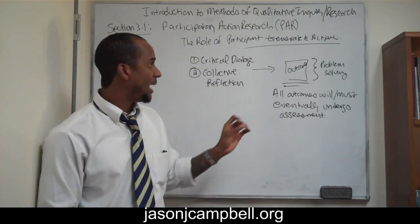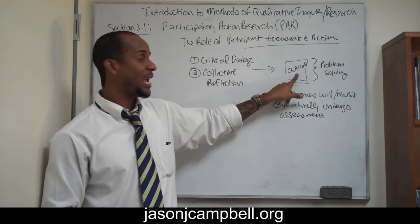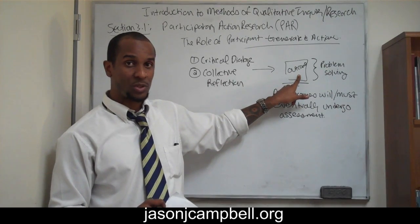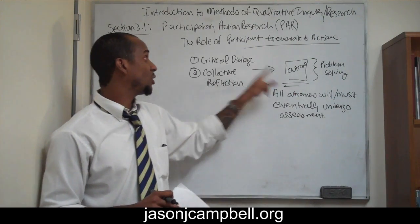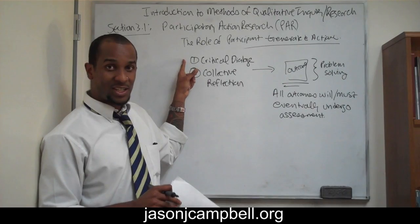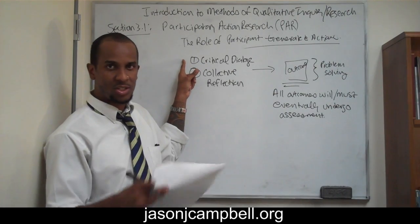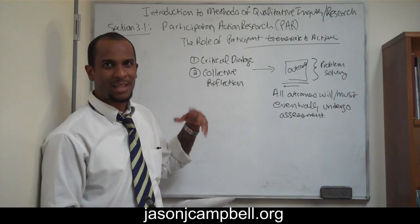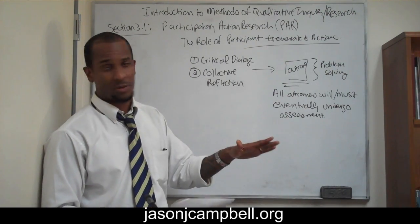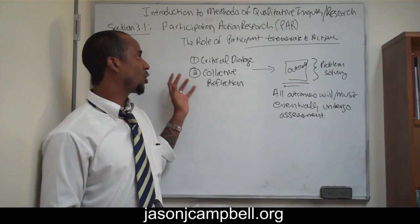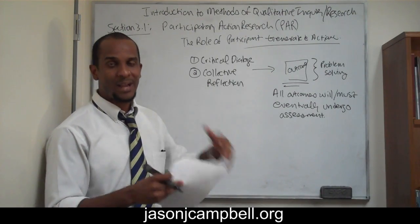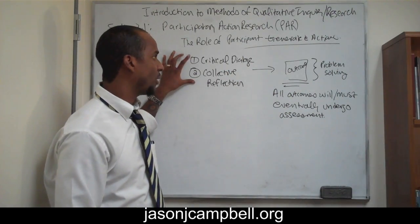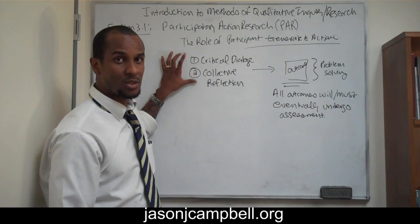It can be the case that you arrive at an outcome that does not solve the problem, and the reason your outcome in participatory action research didn't solve the problem is either because you weren't discussing clearly what the problem was — there might have been communication barriers, translation barriers, language barriers — or worse problems like power imbalances, which would devastate your research, or you weren't collectively reflecting on the process as you went through the method. Something went wrong in either or both of these phases.